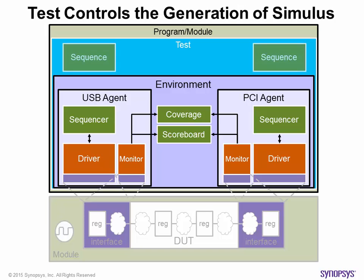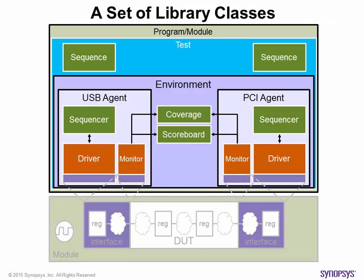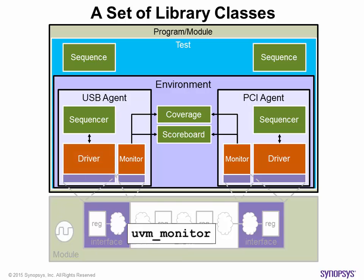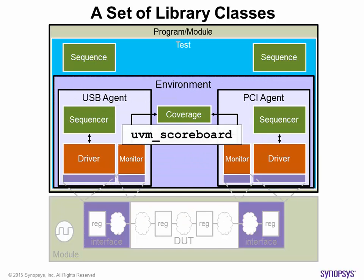Stimulus generation is controlled in the test, and the observed transactions are self-tracked. To reduce the coding effort, UVM also provides you with a set of base library classes. Each distinct component within the test bench has a corresponding base class — all you have to do is customize each for your own needs.